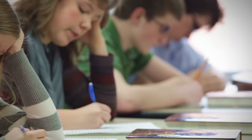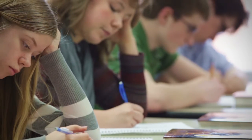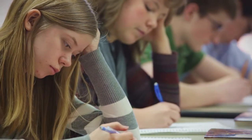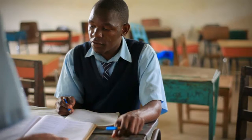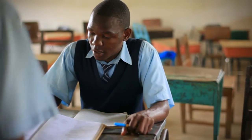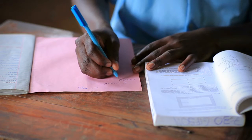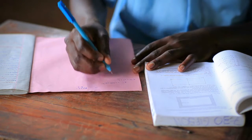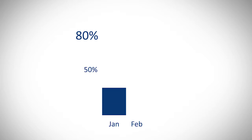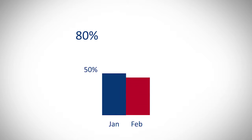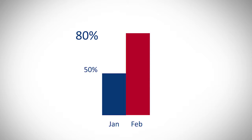You first get the test results of the learners in the grade for the last maths test. Then you form a group of tutors who give extra lessons to learners as the action. After a few weeks you get the results of their next test. You then make a graph that shows the same learners' marks before your action and after, and the positive difference should be easy to see. Then you can prove you have made an impact.